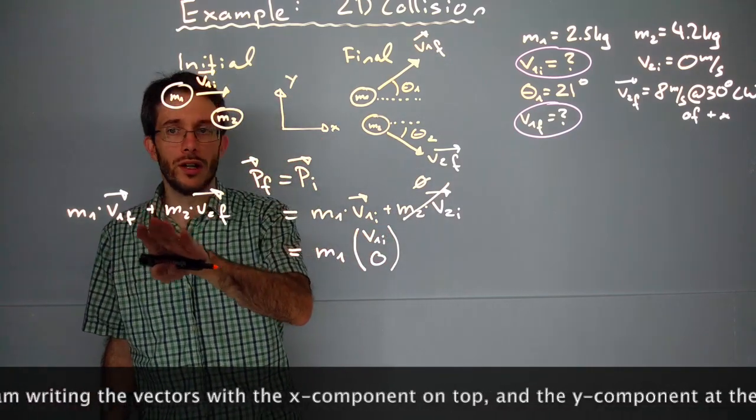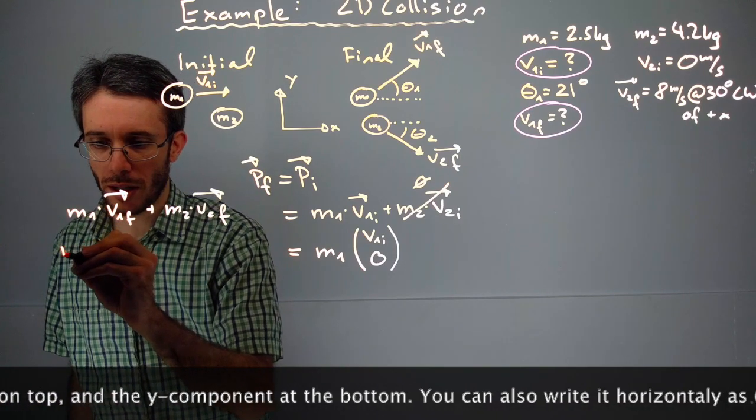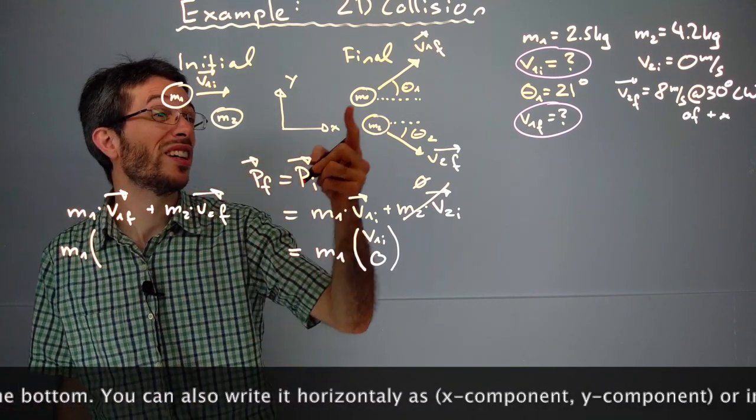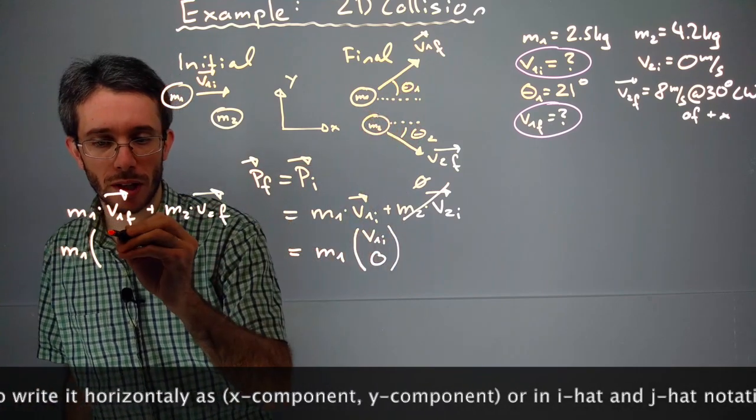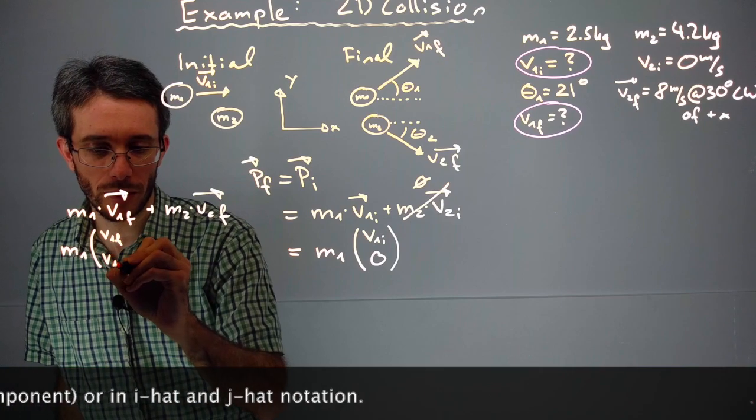Now let's do the same thing for the final part. We had m1 times the vectors. Now here we have both x and y components, so we have v1 final in x, the magnitude.